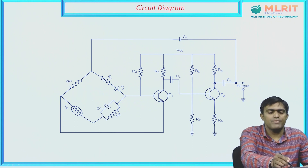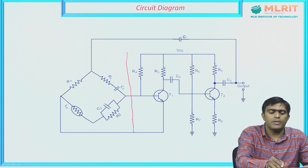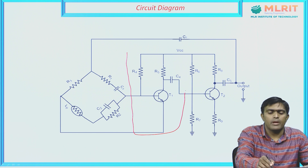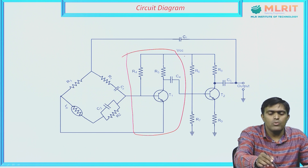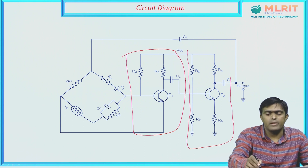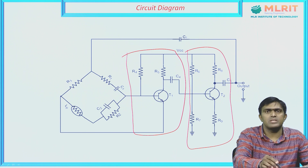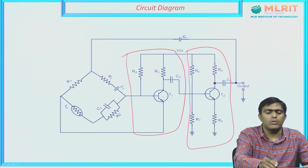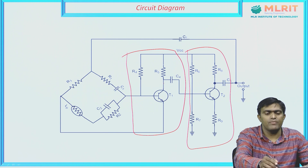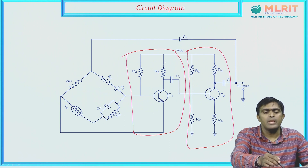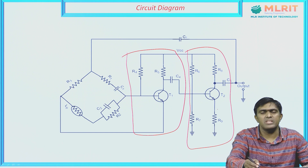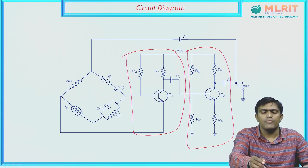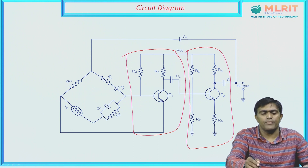The circuit arrangement of the Wien bridge oscillator consists of a two-stage amplifier with an RC bridge circuit. The Wien bridge circuit consists of two amplifiers — two stage amplifier. In the first stage, it consists of a transistor T1 which is connected in a CE configuration. Similarly, the second stage consists of a transistor T2 which is also connected in CE configuration.